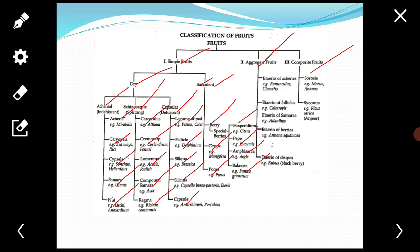The fruitlets of an etaerio may be follicle, achene, drupe, or berry. There are five types of etaerio or aggregate fruits: etaerio of achenes, etaerio of follicles, etaerio of samaras, etaerio of berries, etaerio of drupes.